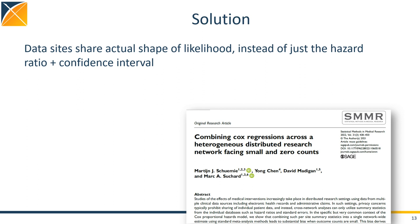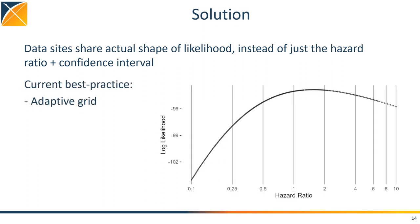And so the solution we propose is to communicate the actual shape of the likelihood function. We describe and thoroughly evaluate this approach in the paper I'm showing here. Our current best practice is to describe the shape of this curve using an adaptive grid, which means we simply provide a bunch of x-y coordinates.